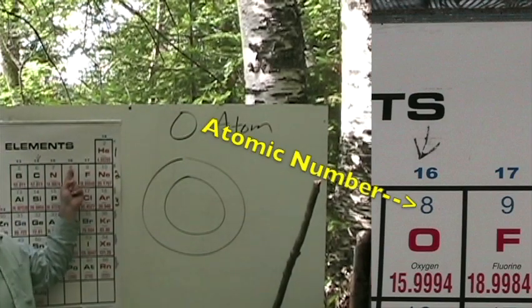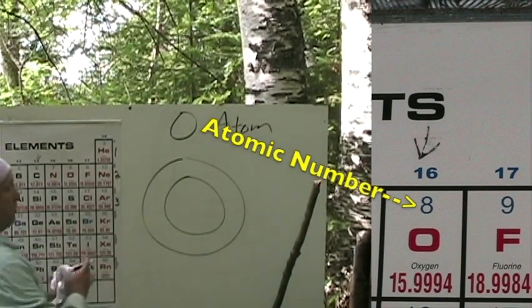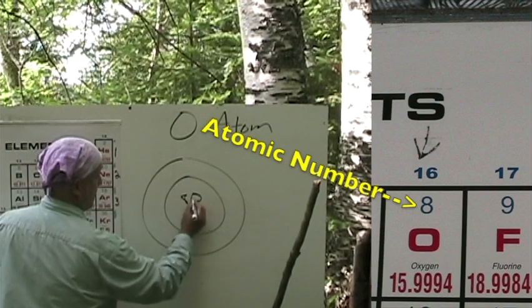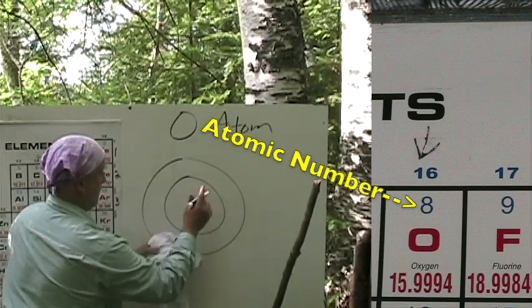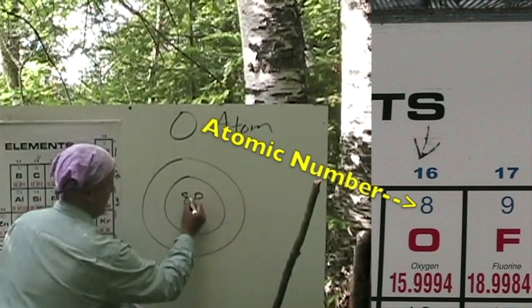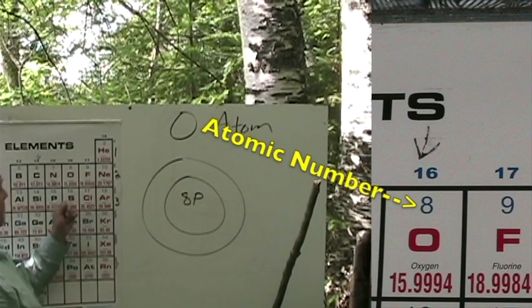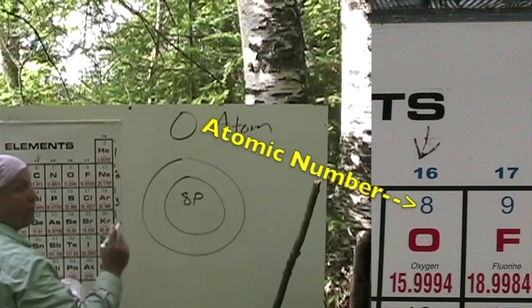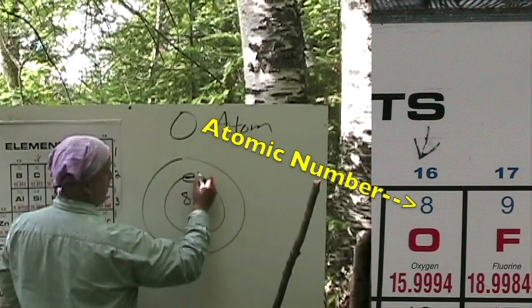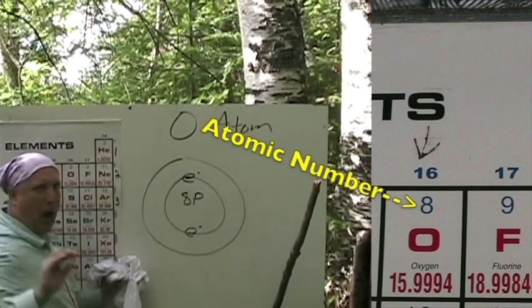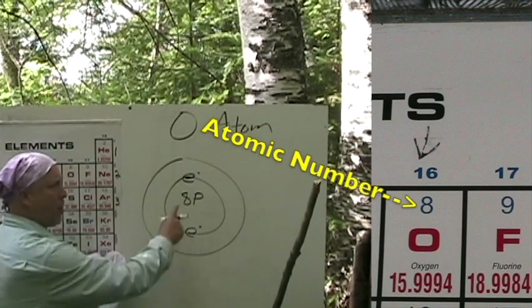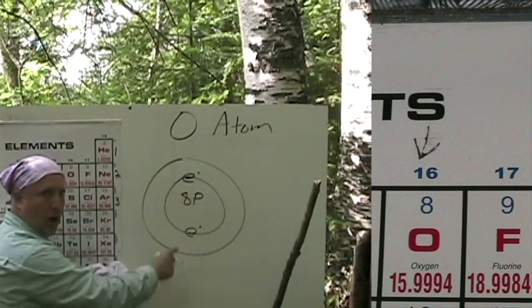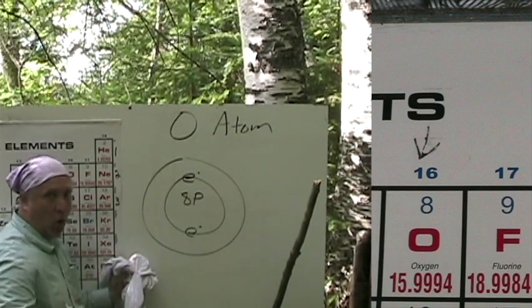Atomic number of eight, so if we have eight protons, we'll put that in there. Eight protons. If we have eight protons, then we know that we have to have eight electrons. First shell is filled with two, and then we fill the next shell up to eight.